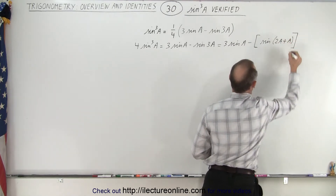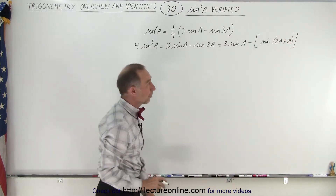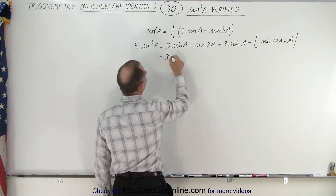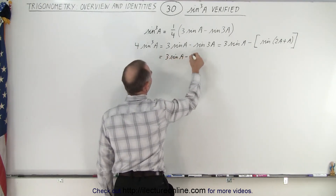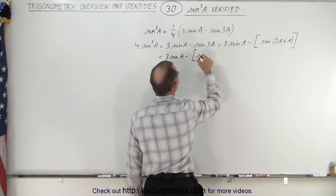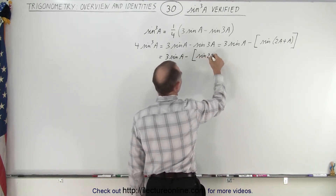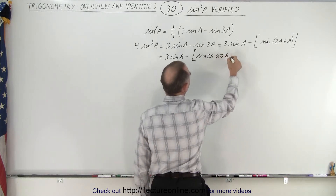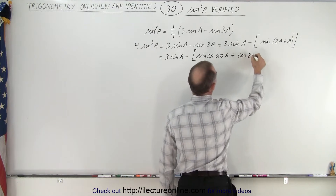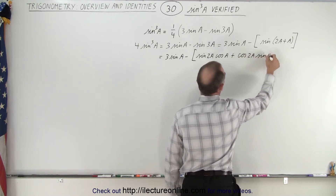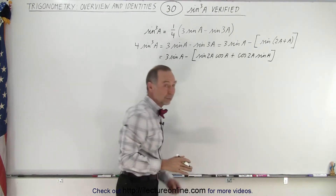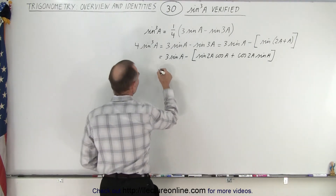So we write sin3A as a sum of two angles and see what we end up with. This is equal to 3 times the sine of A minus — in brackets — sine of 2A plus A, which expands to sine of 2A times cosine of A plus cosine of 2A times sine of A.